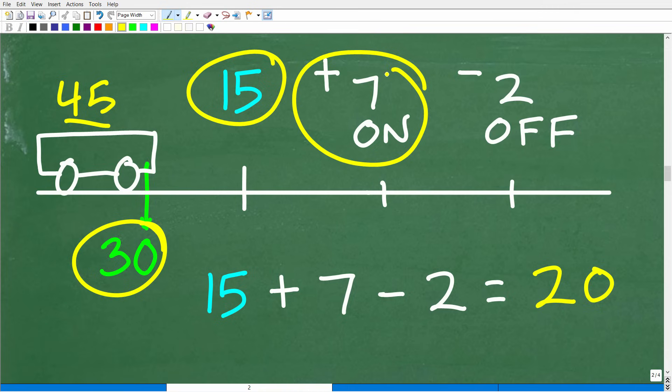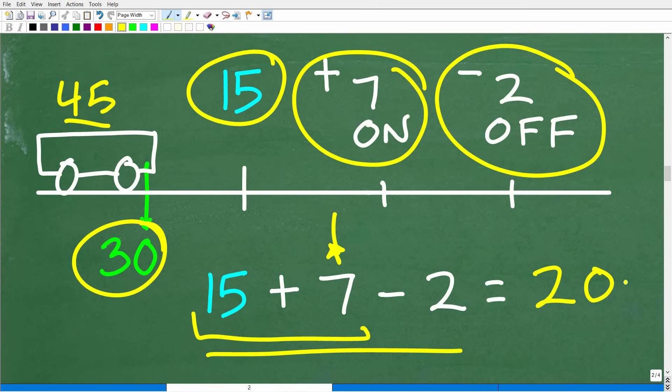Then what happens? Well, seven people get on. Well, then we're going to add seven people to our 15. And then two people after that are going to get off. So we have 15 plus 7 minus 2. And when we do all this number crunching, we end up with 20 people.